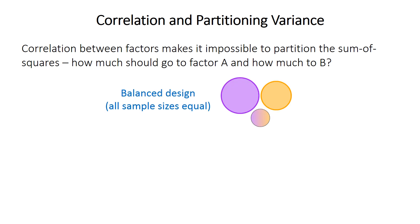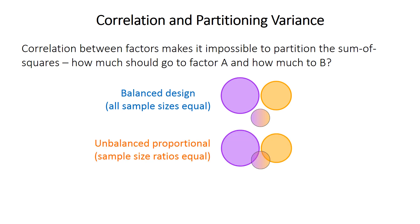Consider a schematic with circles representing sum of squares. In a balanced design, there's no correlation between variables or their interaction. The larger purple circle is the sum of squares for material, the medium orange circle is for phosphate, and the smaller circle is for the interaction. They don't overlap — all are independent. In an unbalanced but proportional design, there's no correlation between the two variables, but there is some correlation with the interaction, so those circles overlap a little.